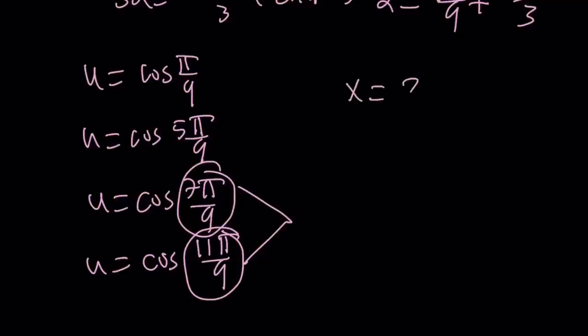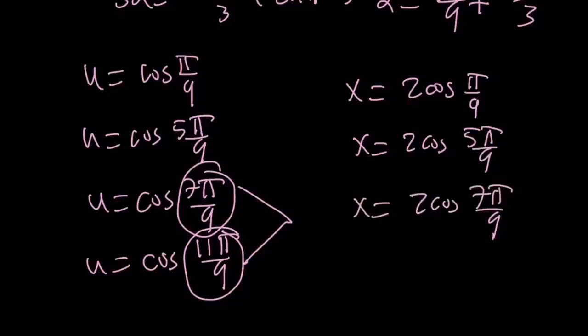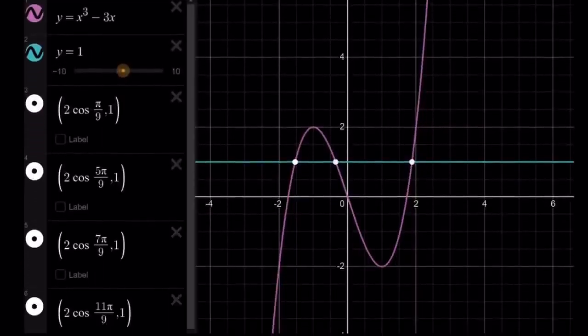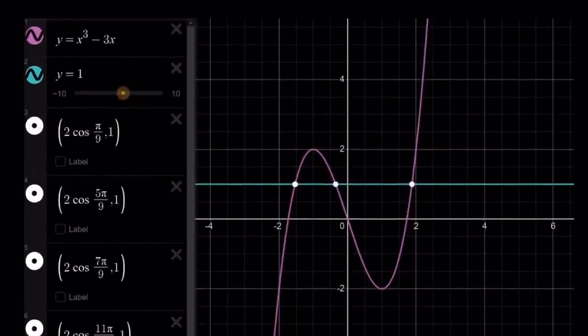x is going to be 2cos(π/9). x is going to be 2cos(5π/9). And then x is going to be 2cos(7π/9). And here is the graph of the situation, showing you all the intersection points. You do see 4 coordinates, but 3 intersection points. And this brings us to the end of this video.